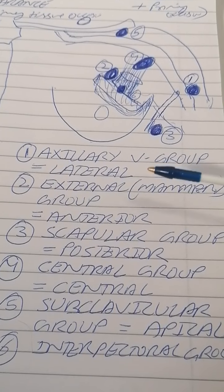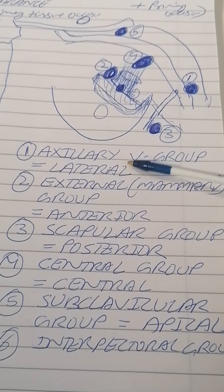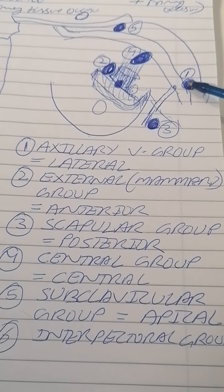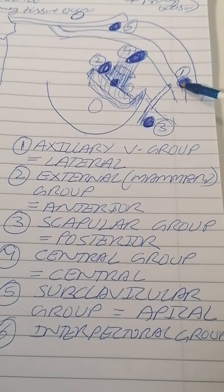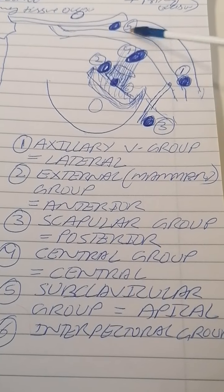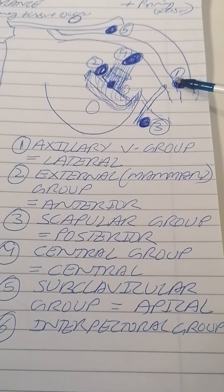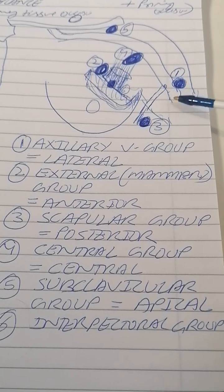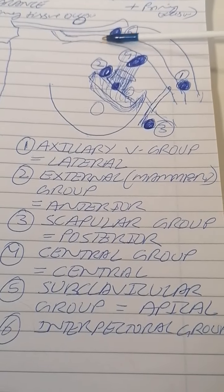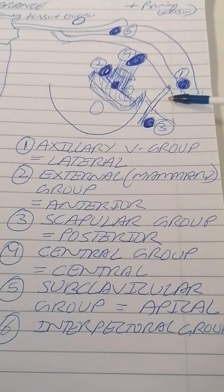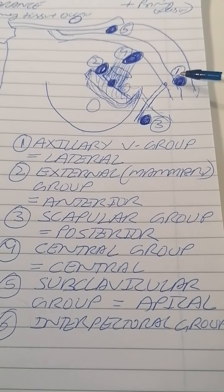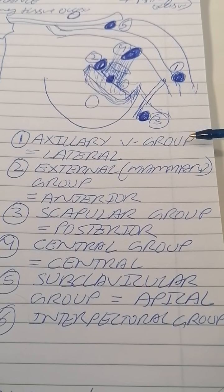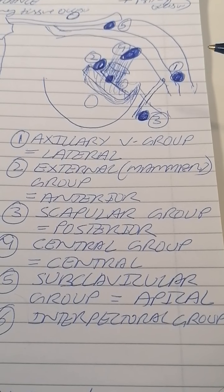The first group is the axillary vein group, also named the lateral group. This group has around four to six lymph nodes. It is called the lateral group because it is the most lateral of all the axillary lymph nodes. Its position is posterior to the axillary vein, which is the continuation of the subclavian vein. This group receives lymph drainage from the upper extremity.